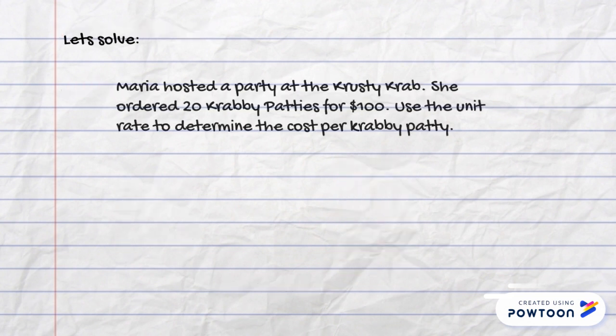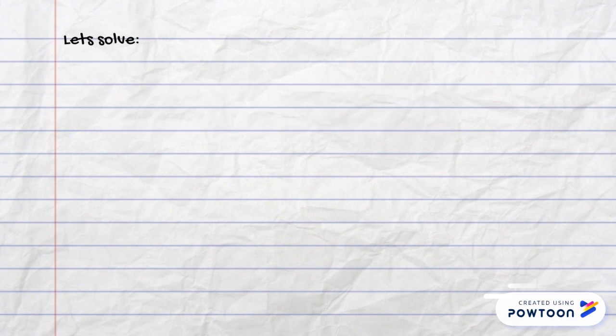Now that we understand some of the language, let's try to solve a problem. Maria hosted a party at the Krusty Krab. She ordered 20 Krabby Patties for $100. Use the unit rate to determine the cost per Krabby Patty.